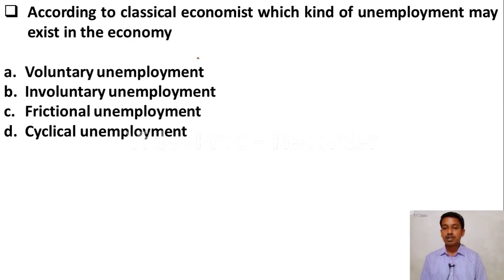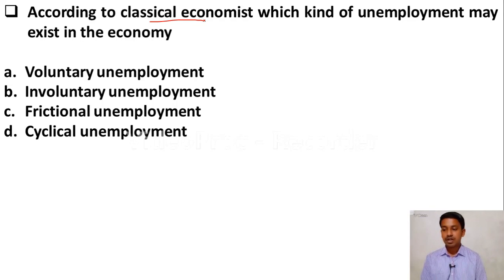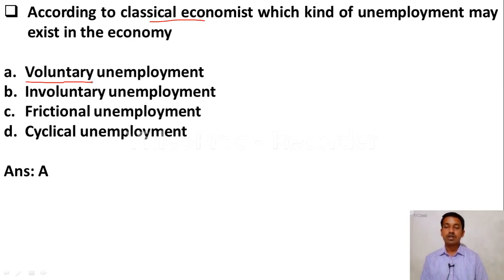According to classical economists, which kind of unemployment may exist in the economy? Option A: Voluntary unemployment. Option B: Involuntary unemployment. Option C: Frictional unemployment. Option D: Cyclical unemployment. The right answer is Option A, Voluntary unemployment. Because according to classical economists, the economy is always under full employment.